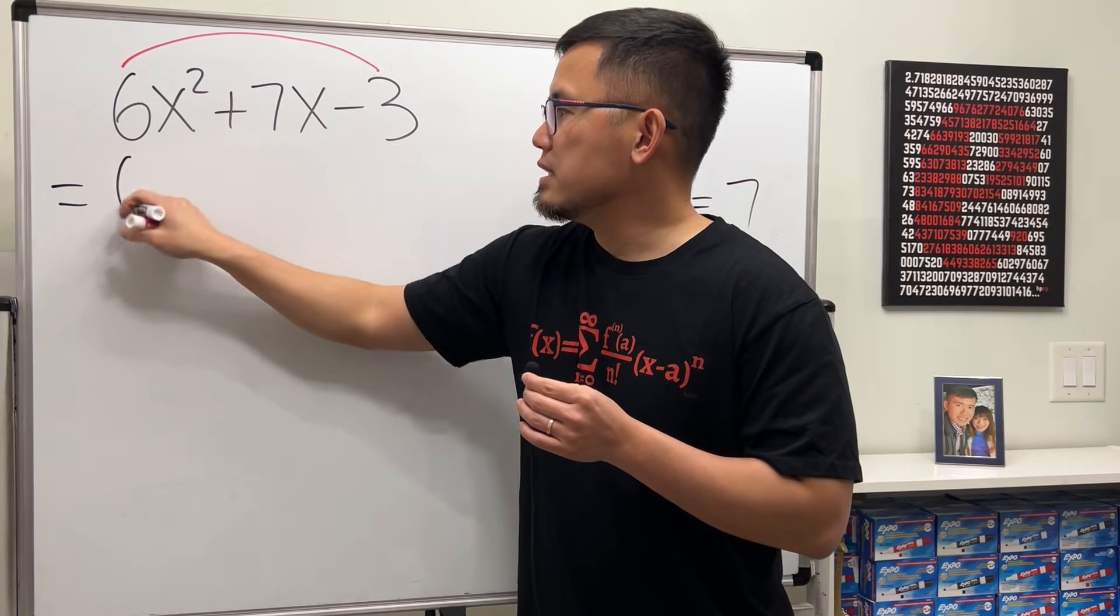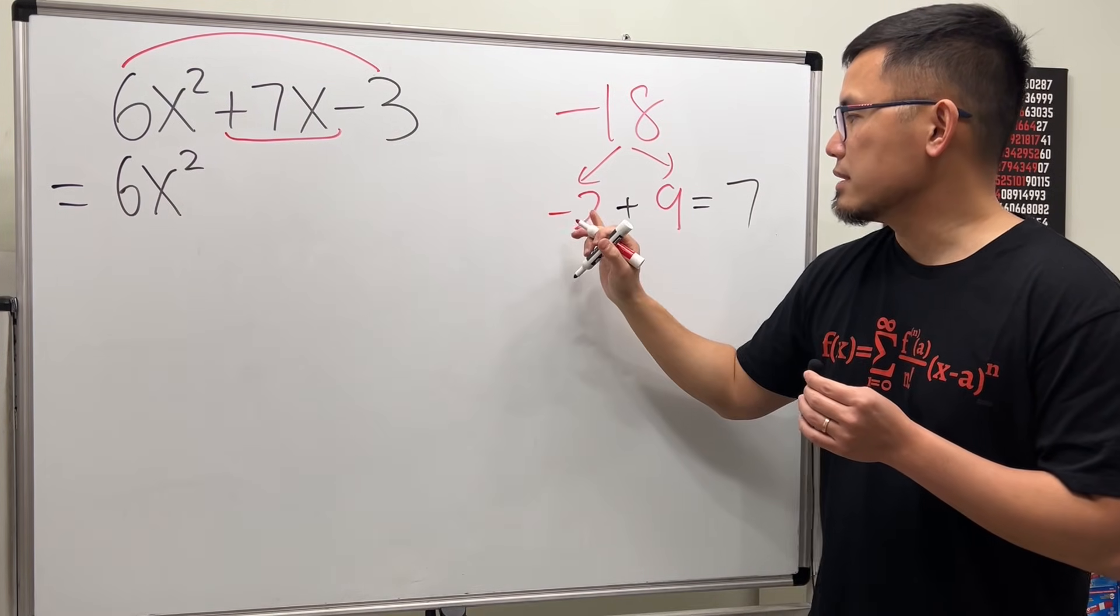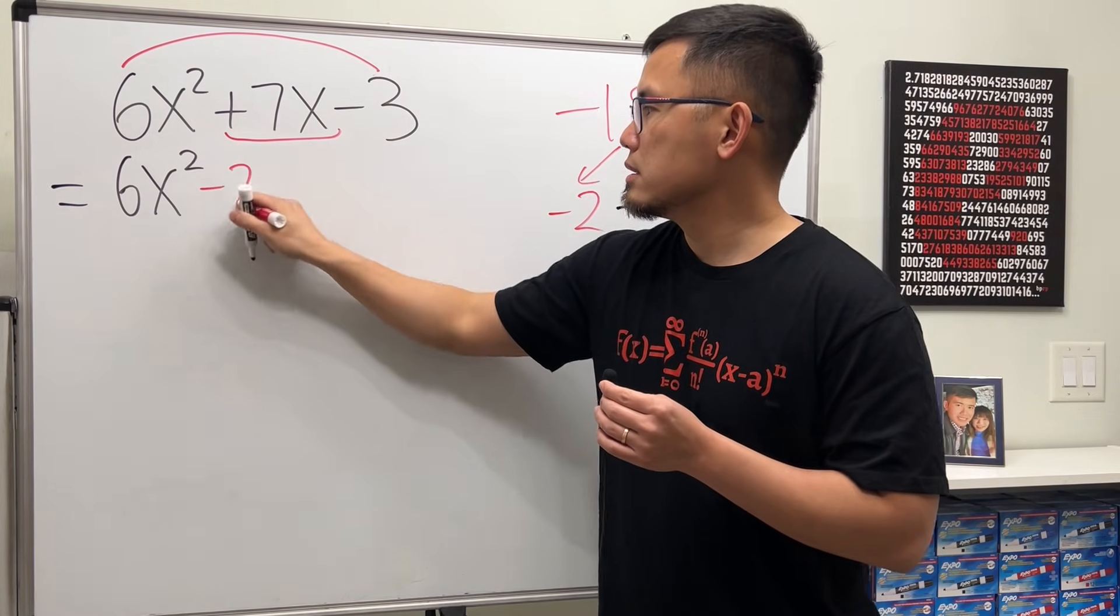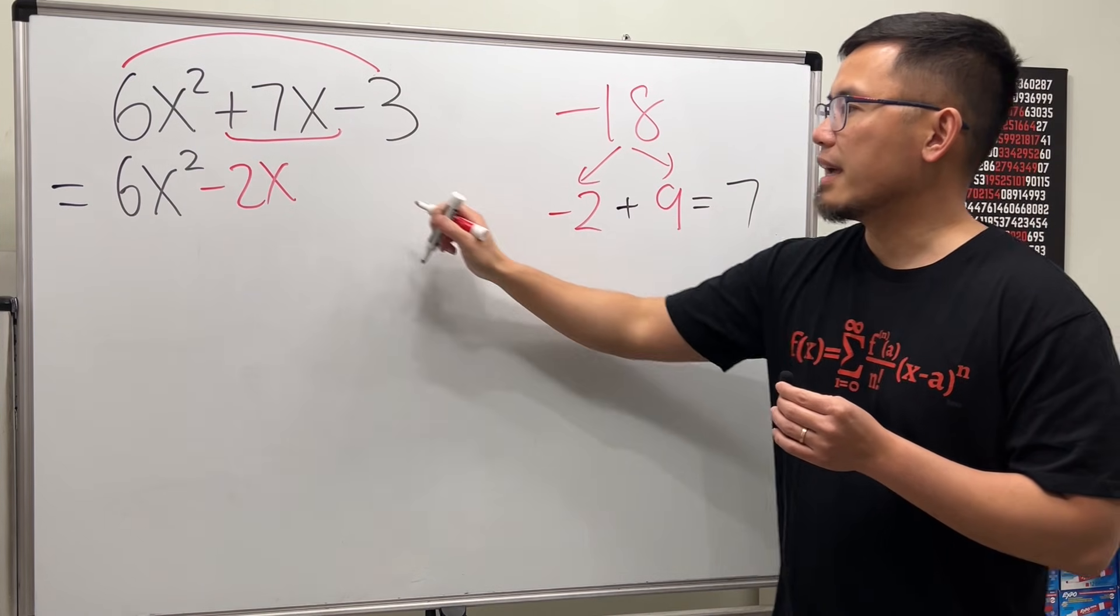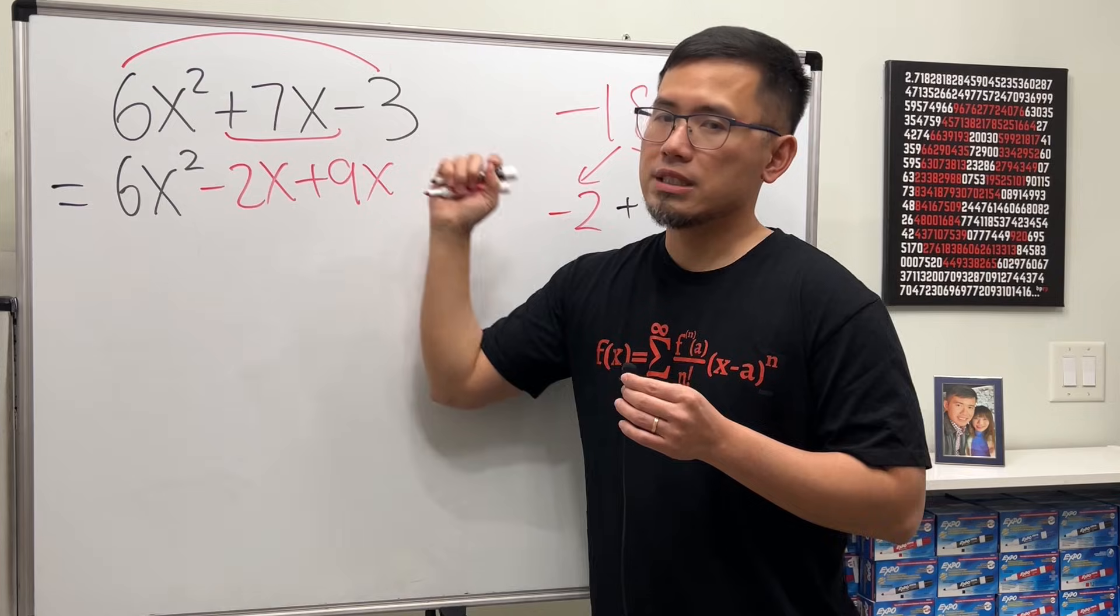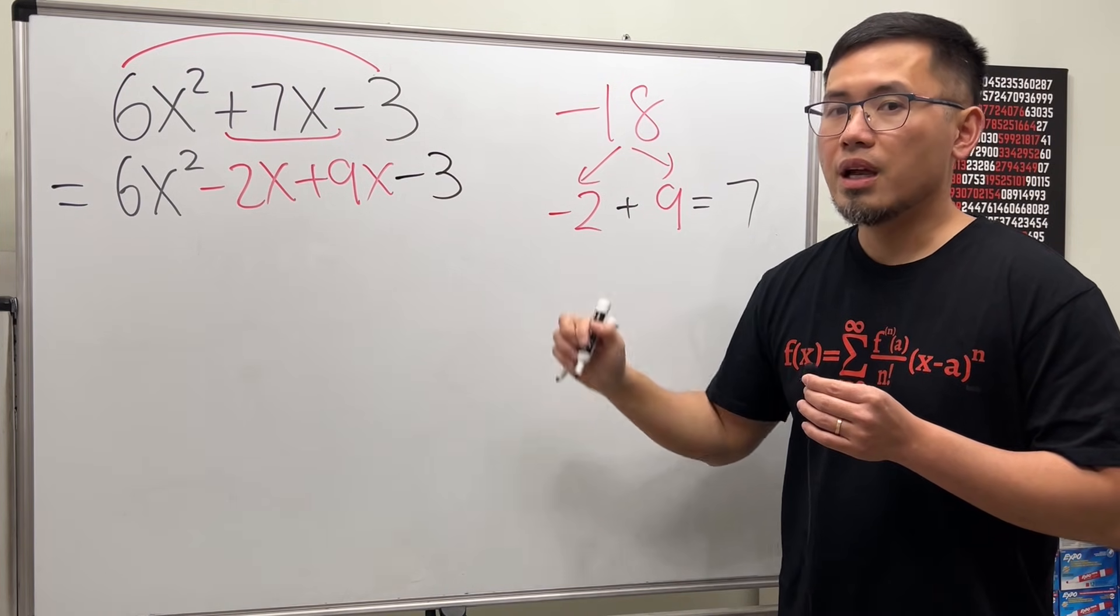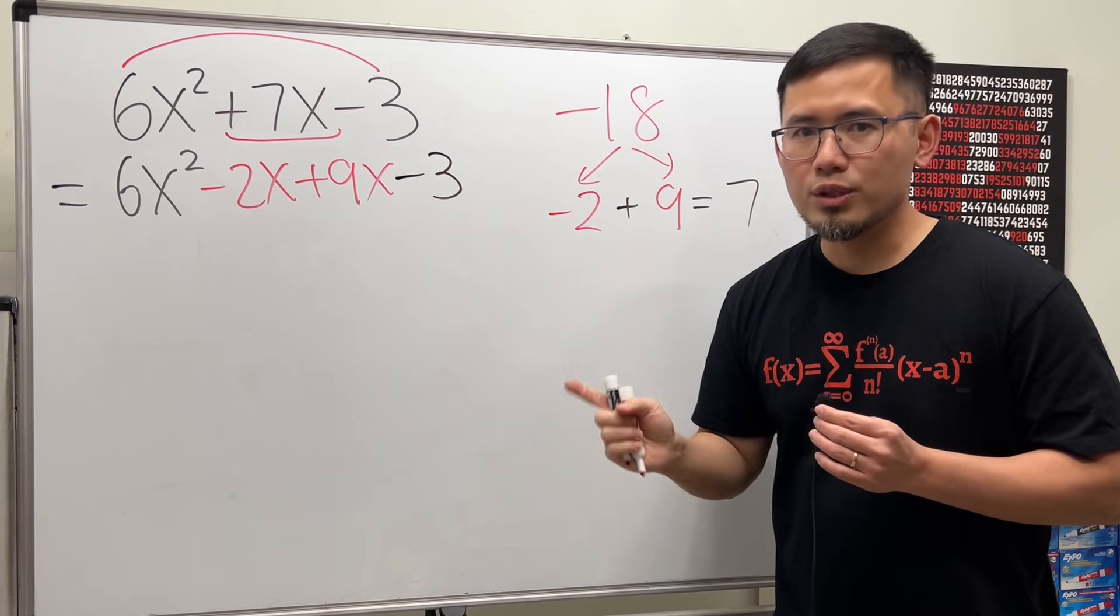We keep the 6x squared. But for the 7x, we will break it down as negative 2x plus 9x. This is still 7x. And then, of course, at the end, we still have the minus 3.